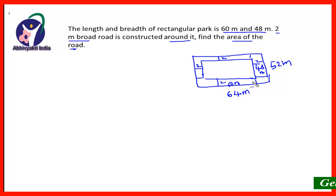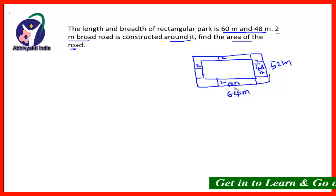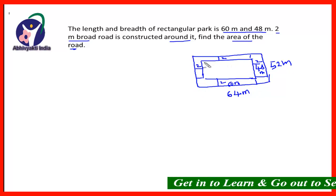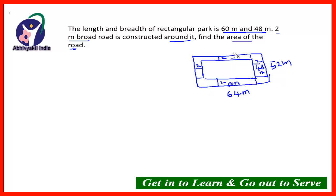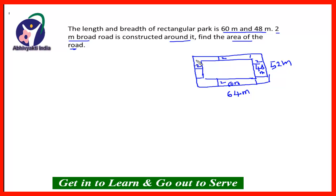First we will solve this in the normal way, and then I will tell you the trick. To find the area of the road, we take the area of the outer rectangle and remove the inner rectangle from it.